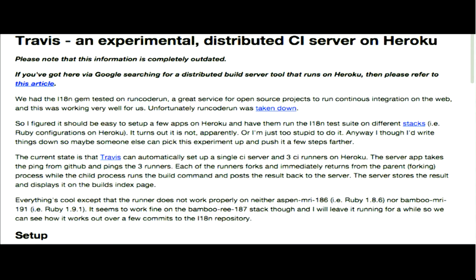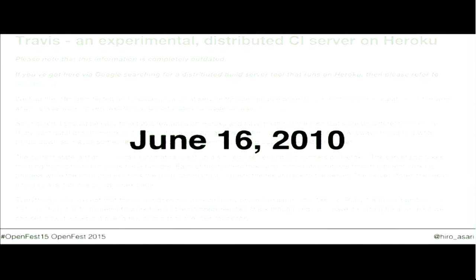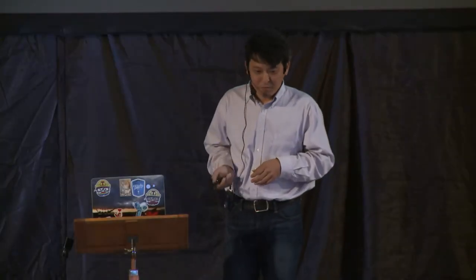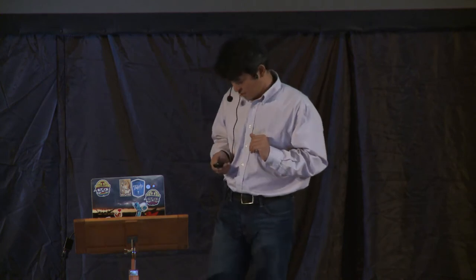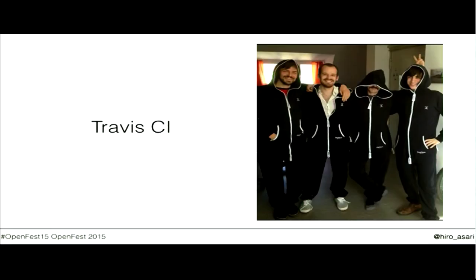He said, 'I'm going to build a distributed CI server.' This was June 16, 2010. He said, 'I figure it's going to be easy.' That's what every software developer says. He open-sourced what he had, and over time he gathered people. Other developers said, 'we can work on this because we think this is a valuable service.' Four of them came together in Berlin and formed a company called Travis CI.